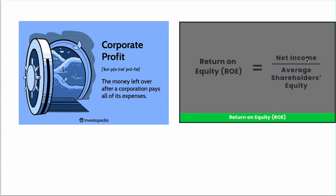If you get a return on equity of 10 to 15 percent, that's about where you should aim. A return on equity of 30, 40, or 50 percent is not sustainable. You want a steady return on equity over time. It means the assets of the corporation are earning 10 to 15 percent — like a CD. If they liquidated the company and went to a bank, they'd need to earn that same 10 to 15 percent return.